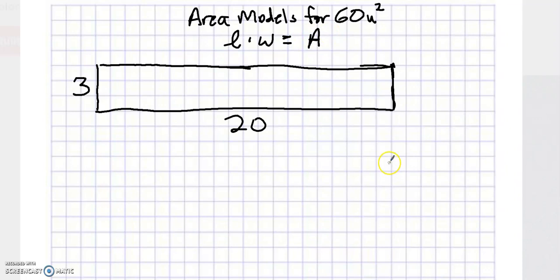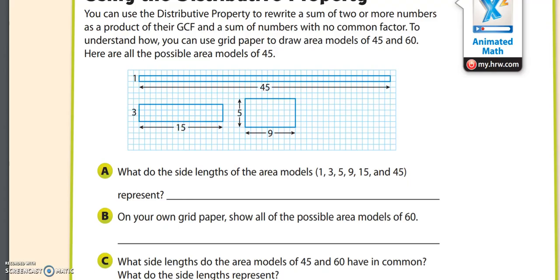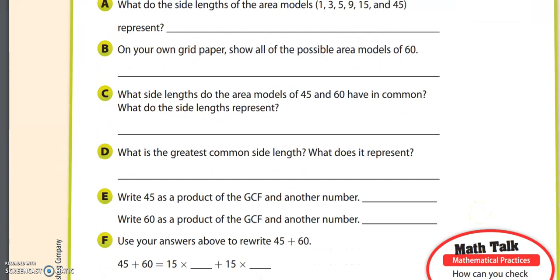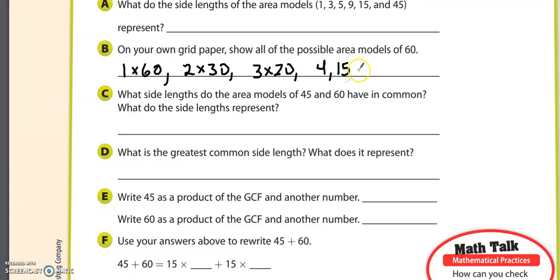There are going to be 5 more — a total of 6 area models, so you need to do all 6. The dimensions are: 1 by 60, 2 by 30, 3 by 20, 4 by 15, 5 by 12, and 6 by 10. Then check with your peers or your teacher when you're done.